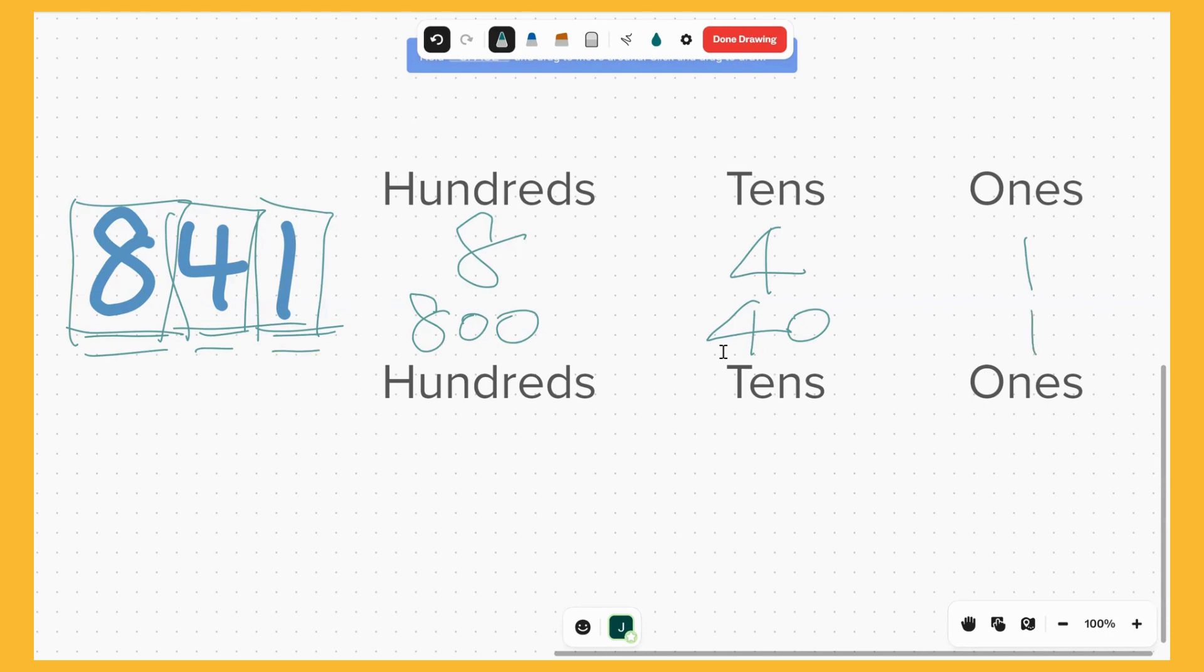So when we add these numbers together, it's 841. We call this table here the place value table.